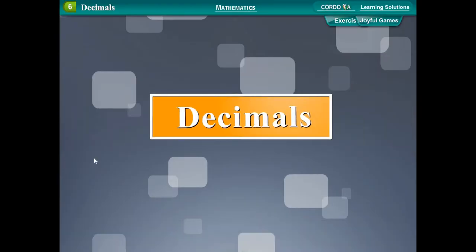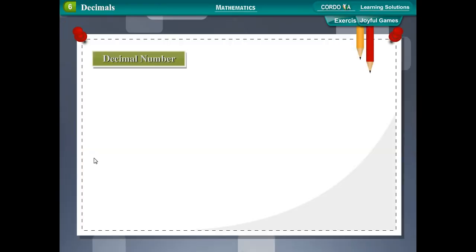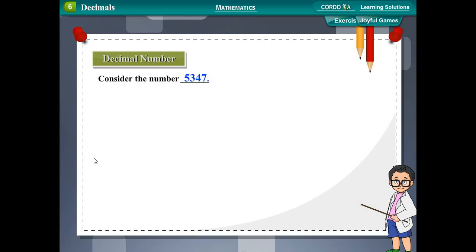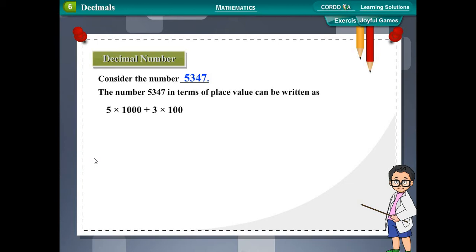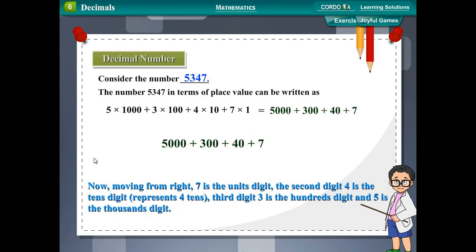Chapter 6: Decimals. Consider the number 5347. The number 5347 in terms of place value can be written as 5 into 1000 plus 3 into 100 plus 4 into 10 plus 7 into 1, which is equal to 5000 plus 300 plus 40 plus 7.